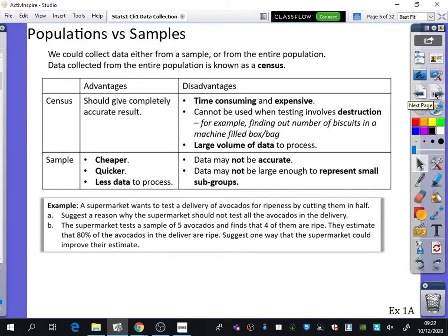We need to talk about differences between populations and samples. We could collect data either from a sample or from the entire population. This is another key word: Data collected from the entire population is known as a census.